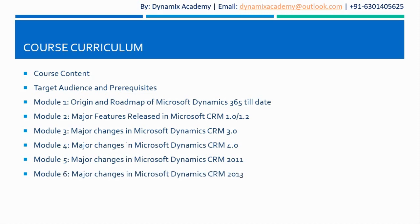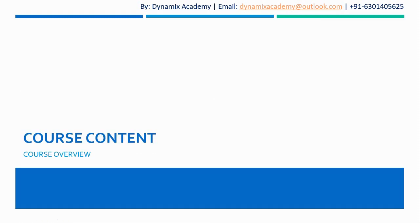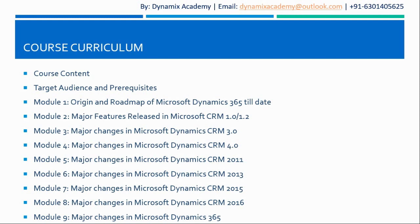In module number six we will see major changes in Microsoft Dynamics CRM 2013, in module number seven the changes in CRM 2015, in module number eight the changes in CRM 2016, and in our last module, module number nine, the major changes in Microsoft Dynamics 365, which is the current latest version of the Microsoft Dynamics family of products. That is the overall course curriculum for this History of Microsoft Dynamics 365 course. In our next video we will see the detailed course content. I hope to see you all in the next video — bye bye and take care.